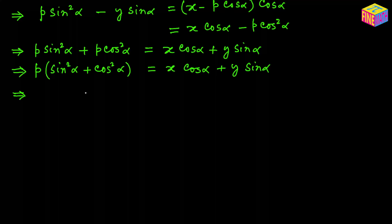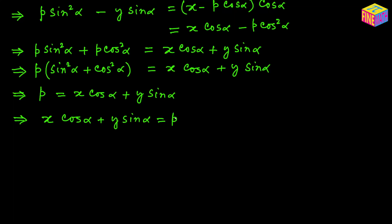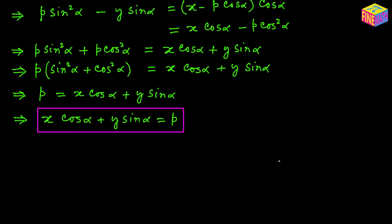By the Pythagorean identity, sin²(alpha) + cos²(alpha) = 1, so the left side becomes simply p. Therefore the equation of straight line A is: x·cos(alpha) + y·sin(alpha) = p. That is the normal form, or perpendicular form, of the equation of a straight line when p and alpha are provided.